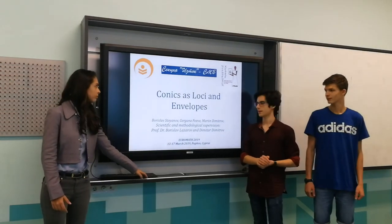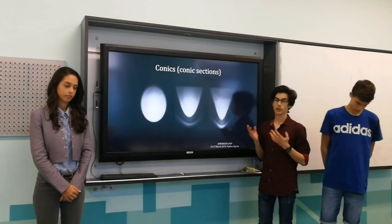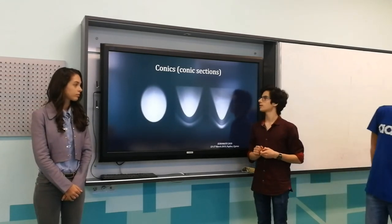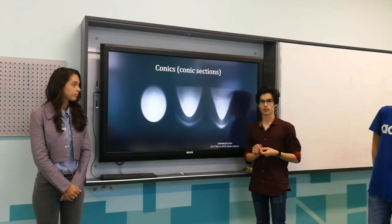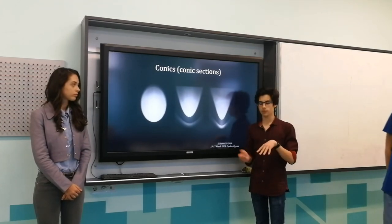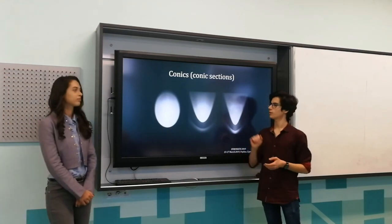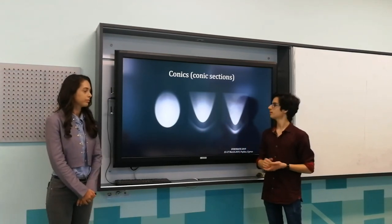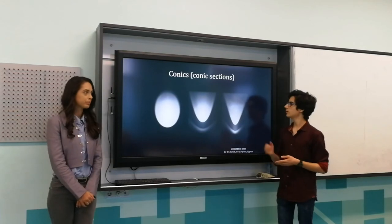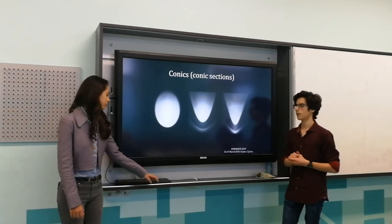First, let me explain the title. What are the conics, or the conic sections? As the name suggests, they are a curve obtained as the intersection of a circular conic surface with a plane. In the beginning you can see an X, then the shape becomes a parabola, and in the end it transforms into one of the branches of a hyperbola.